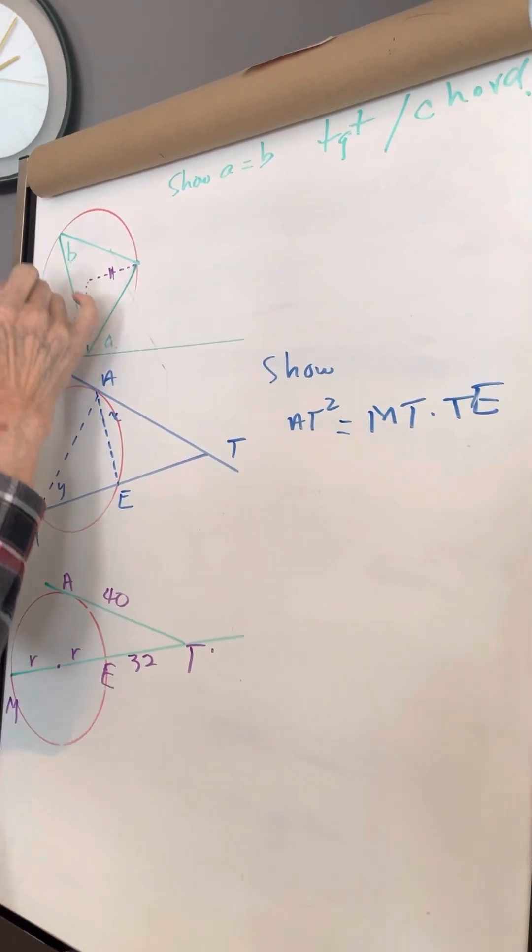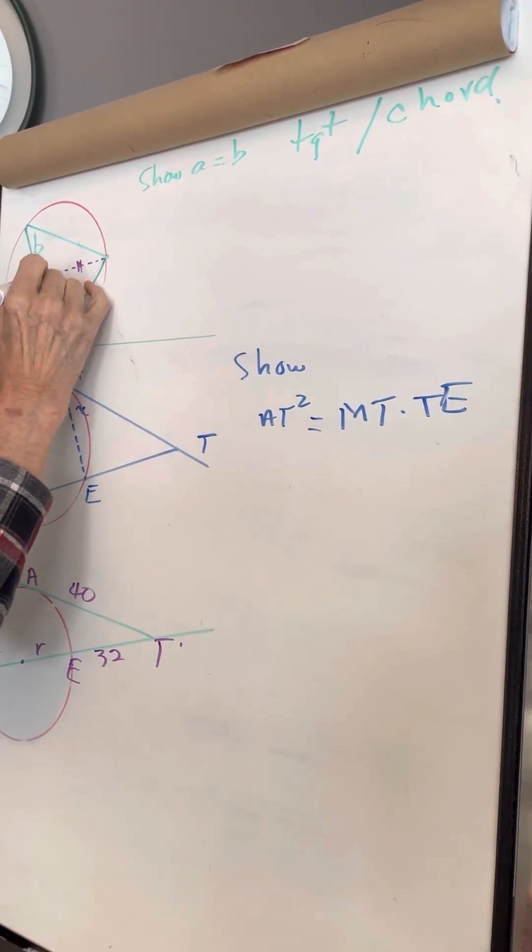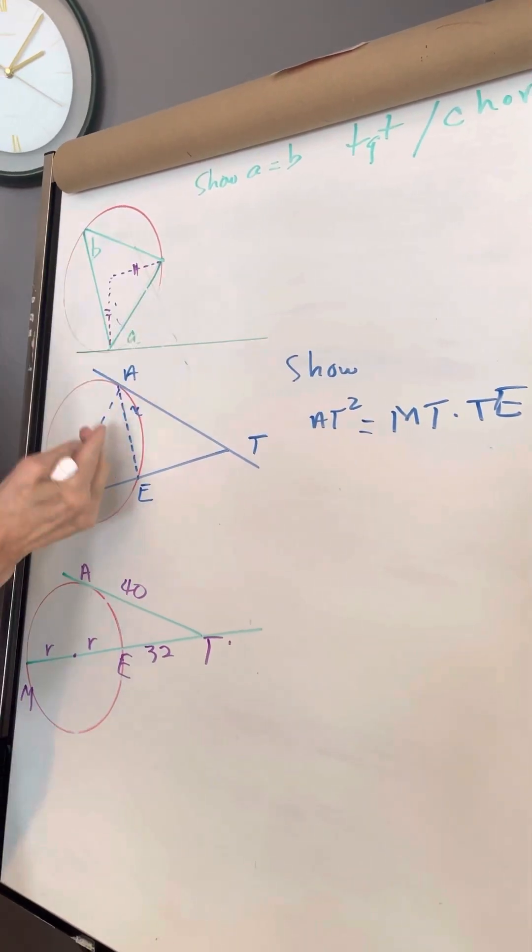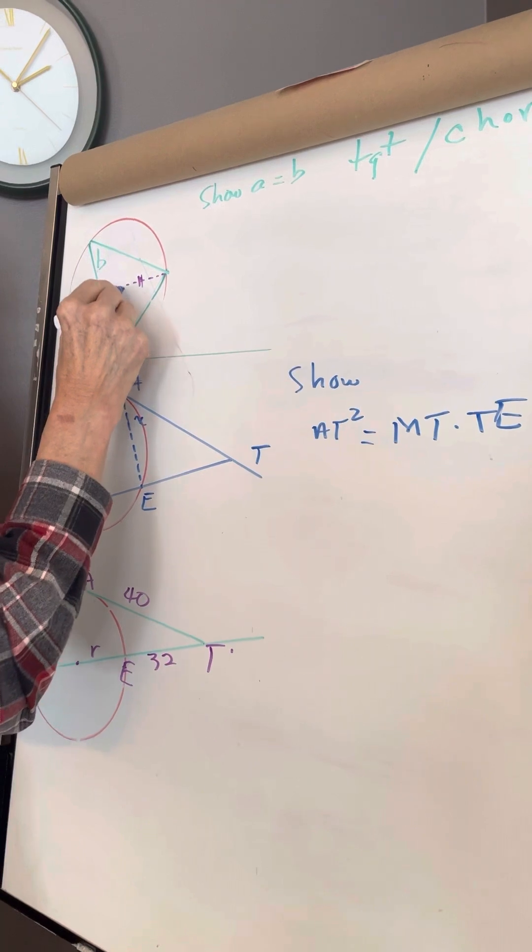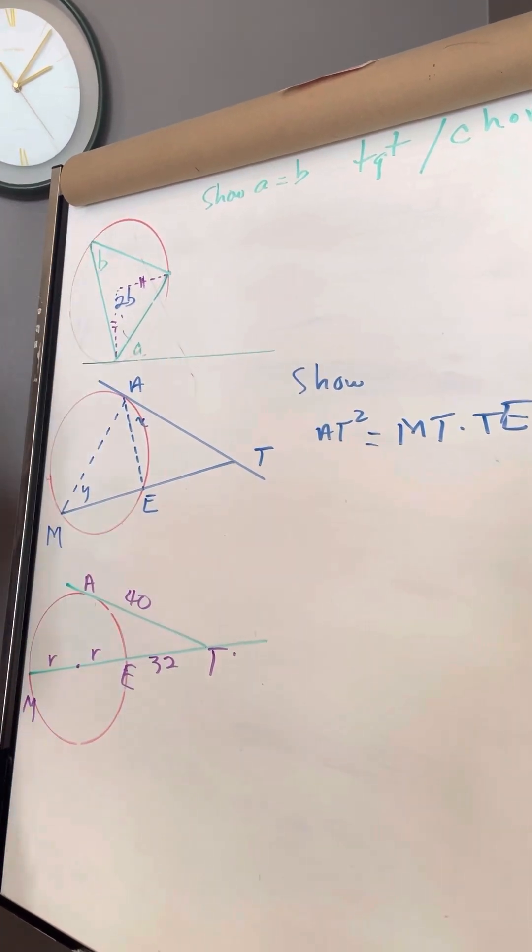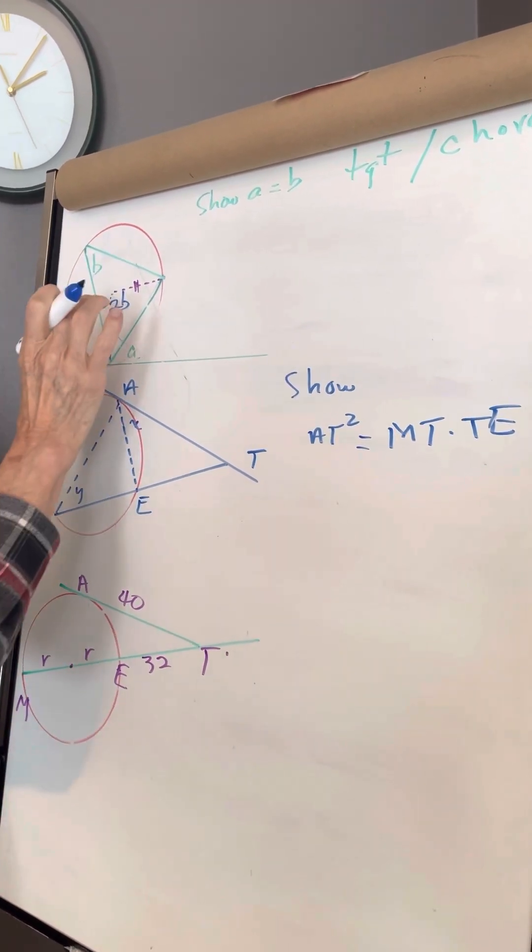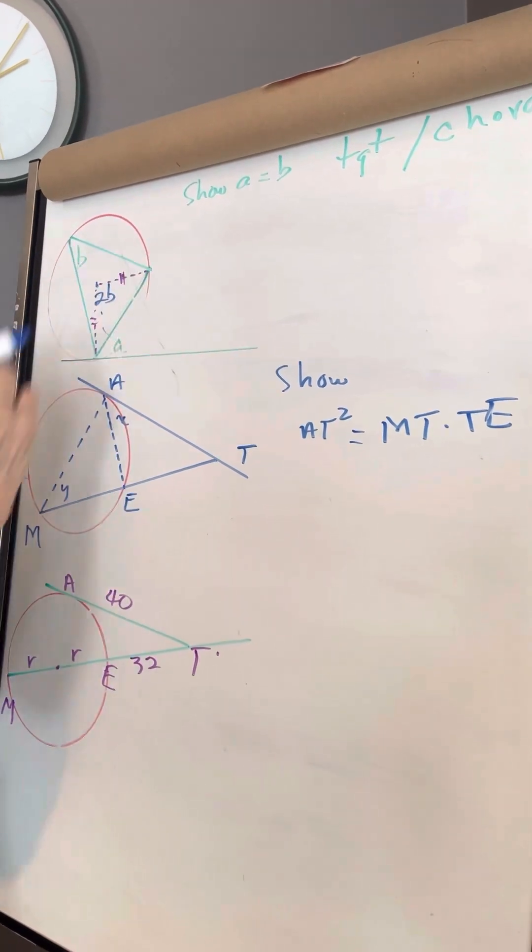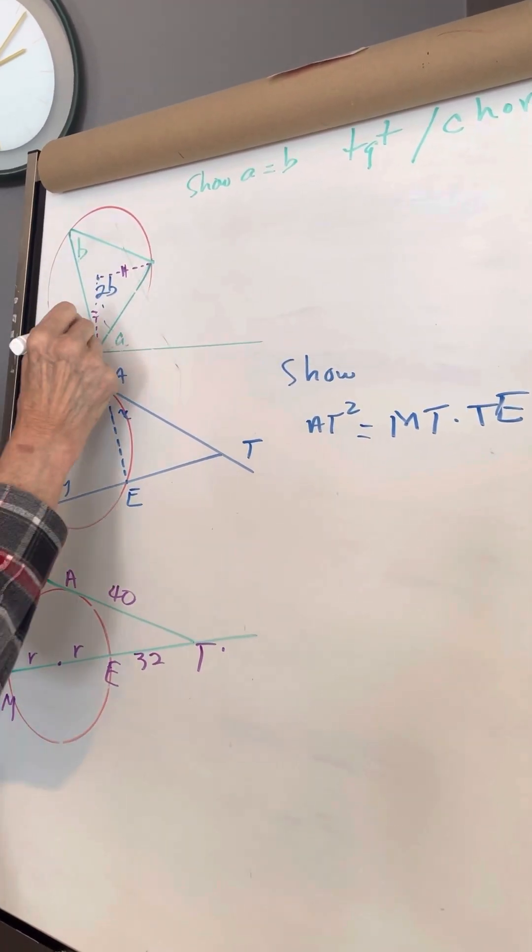Well, first thing I have to know is that the center angle, which is a sector angle, is always twice the size of the inscribed angle. This is the center of the circle, so this triangle is isosceles, which means the base angles are equal.